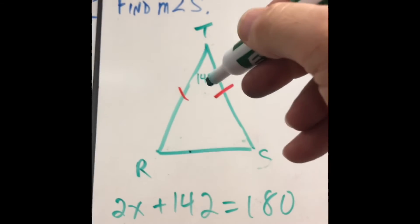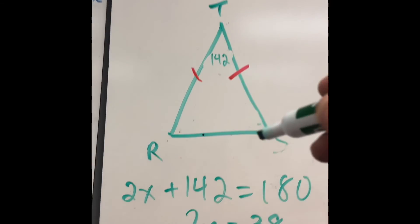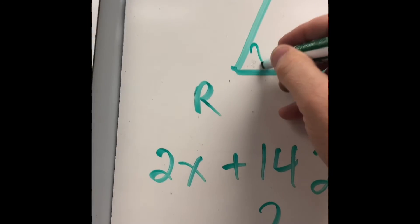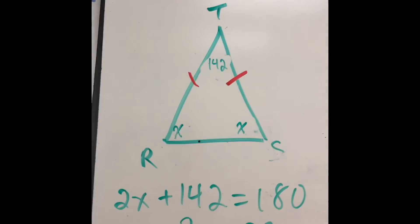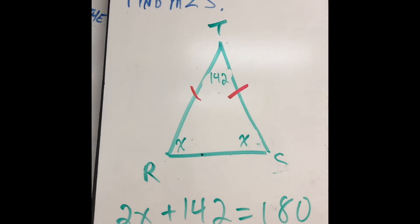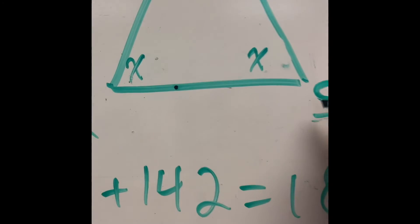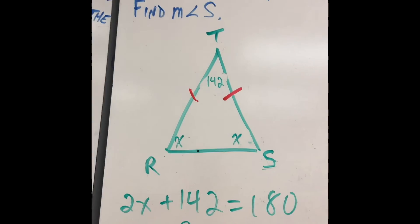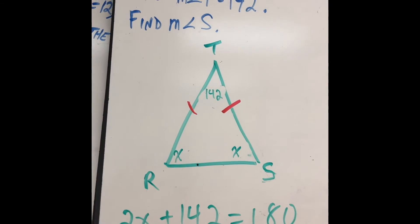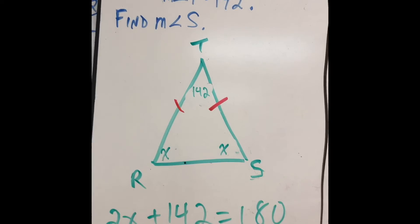If this is 142, okay, I'm going to call this x and this x. 2x plus 142 equals 180. What's angle S? This is angle S here. Angle S, right, is going to be one of the x's. Solve for x, you get 19. Done.